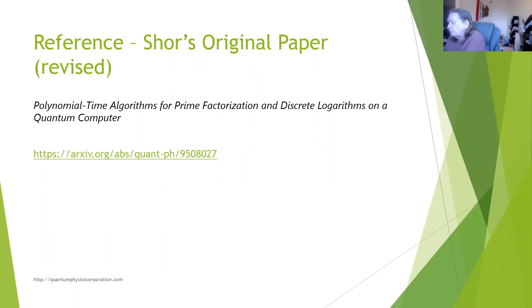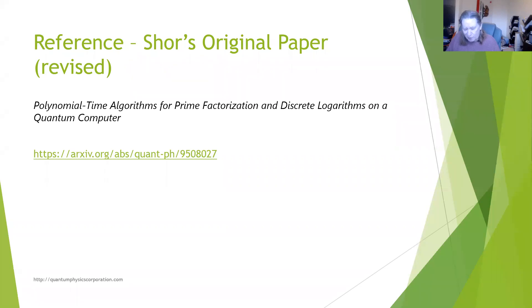So Peter Shor — Peter and Jennifer Shor, perhaps his daughter or his wife — wrote this poem: 'If the computers you build are quantum, then spies everywhere will want them. Our codes will all fail, and they'll read our email till we get crypto that's quantum and daunting.'